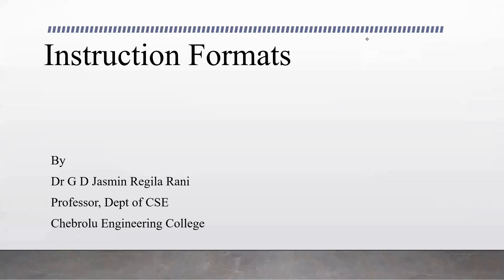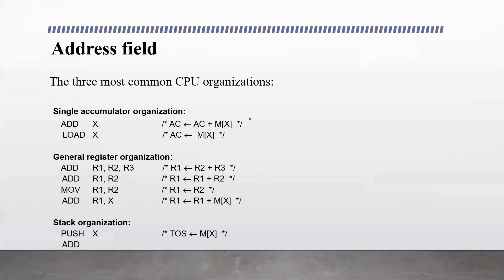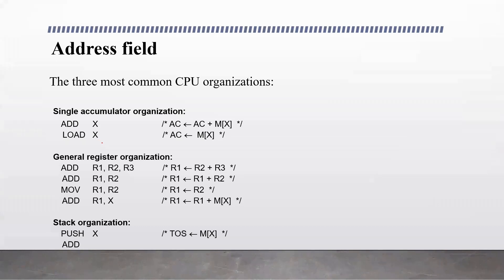Good morning students. We have been discussing instruction formats. In the last class we discussed the three most common CPU organizations that define the number of address fields in an instruction. The three most common CPU organizations are single accumulator organization, general register organization, and stack organization. In single accumulator organization, the accumulator register is used implicitly, so the instruction will have a single address. The operation is performed with the operand specified by the address and the operand in the accumulator — one operand is always stored in the accumulator.